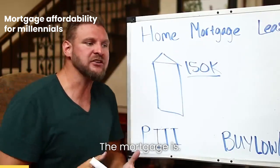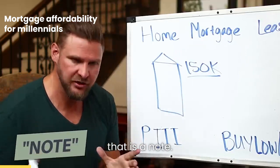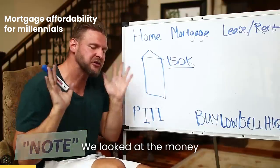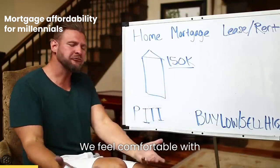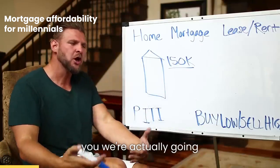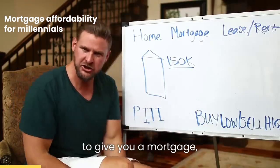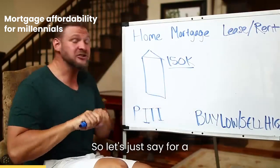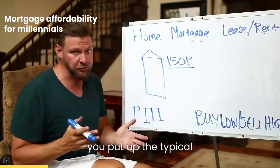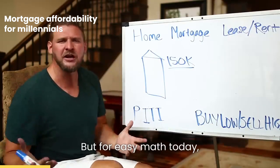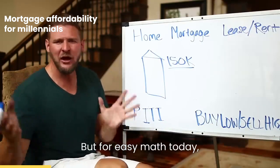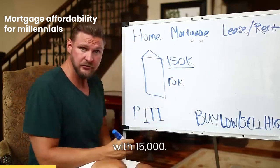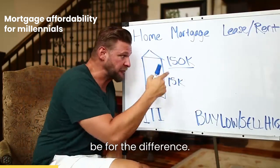The mortgage — another name for that is a note. That's where the bank says, 'We looked at your job history, we looked at the money you're making, we feel comfortable with you, we're actually going to give you a mortgage.' Which means we're going to lend the money you don't put up. So let's say you put up the typical three percent, five percent — but for easy math today we'll call it ten percent. Let's say you came up with fifteen thousand dollars, then the mortgage would be for the difference.